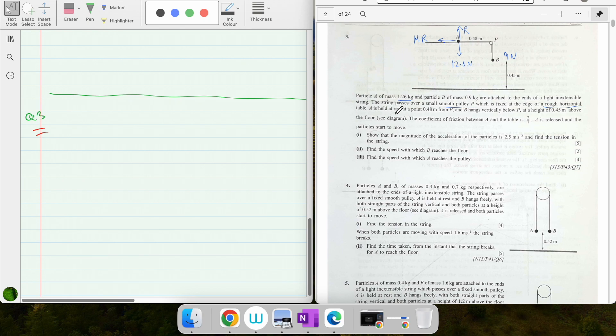A is held at rest 0.48 meters from P and B hangs vertically below P at a height of 0.45 meters above the floor. The coefficient of friction between A and the table is 2/7.